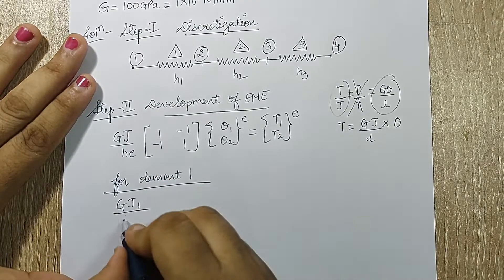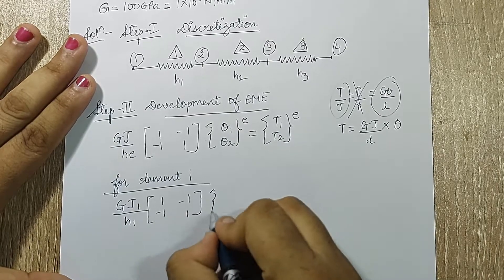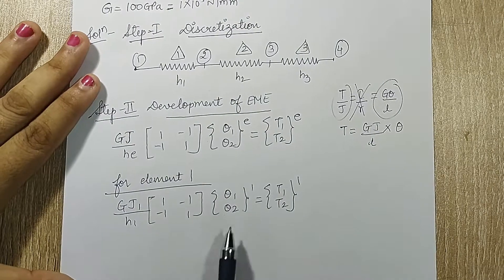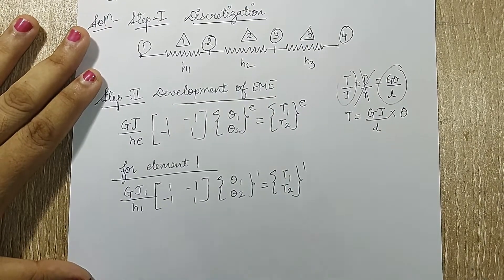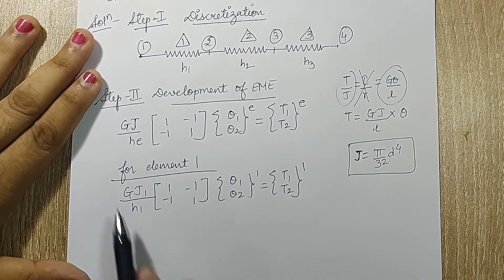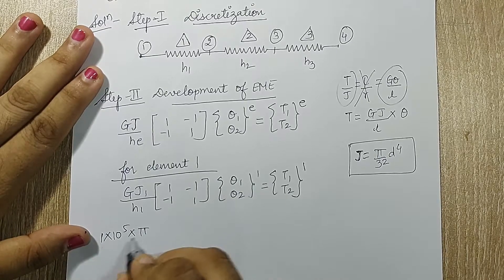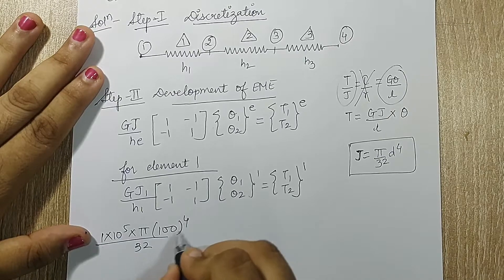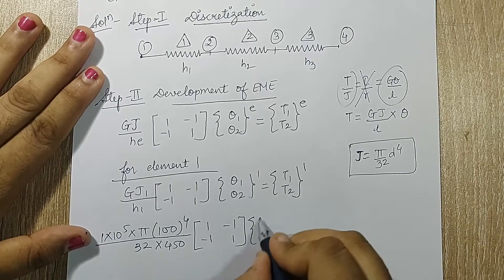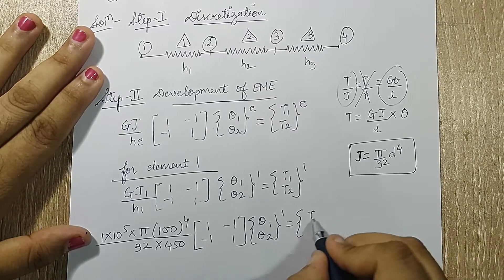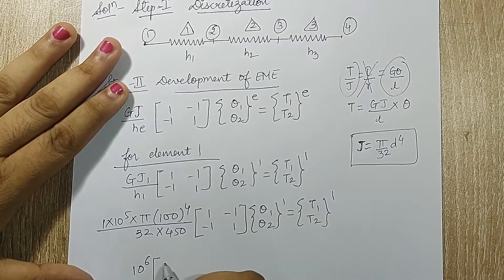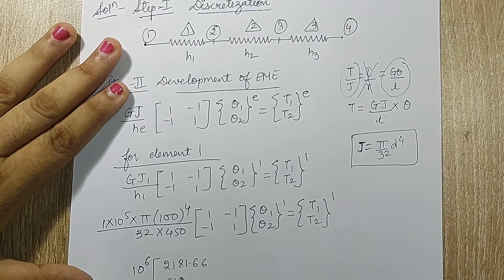For element 1: GJ1/h1 times [1, -1; -1, 1] times [theta 1; theta 2] raised to 1, equals [t1; t2] raised to 1. T is torque applied and theta is angle of twist. J has the formula pi/32 times d raised to 4. Substituting: G is 1 into 10 raised to 5, J is pi/32 times 100 raised to 4, and h1 is 450. Solving, I get 10 raised to 6 as a common factor and the number obtained is 2181.66.